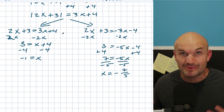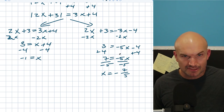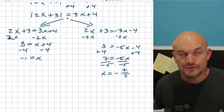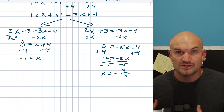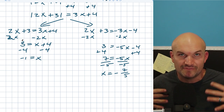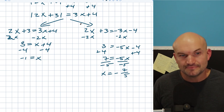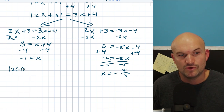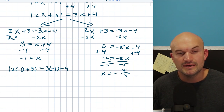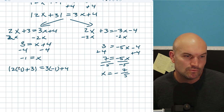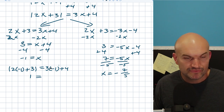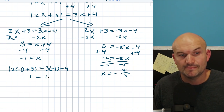Now let's check our work. We have to look for extraneous solutions — just because we got a solution for these two equations does not mean it's a solution for the original equation. For X equals negative 1: 2 times negative 1 plus 3 is negative 2 plus 3, which is 1. Absolute value of 1 is 1. And 3 times negative 1 plus 4 is negative 3 plus 4, which is 1. So that one works.